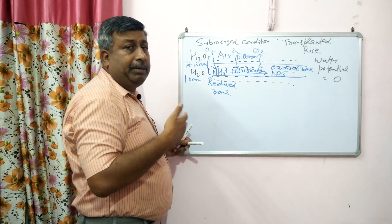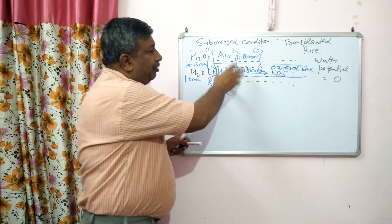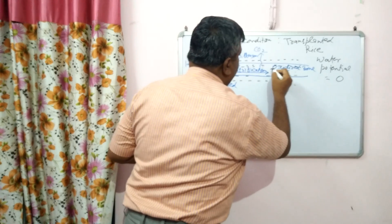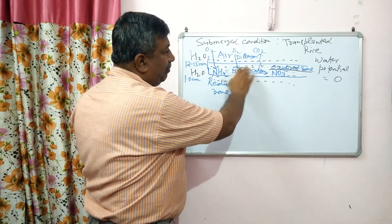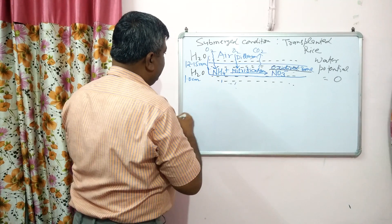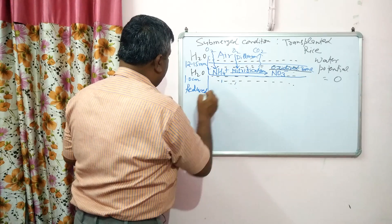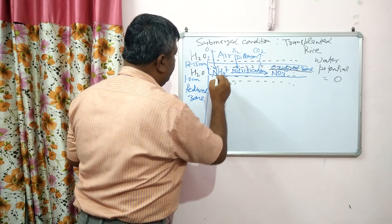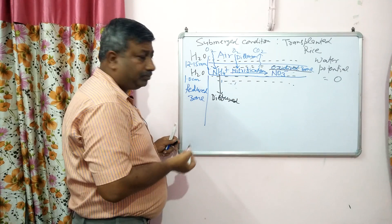In the oxidized zone, when we apply ammonium-containing fertilizer such as urea, it is converted into ammonium ion. Since this is the oxidized zone, aerobic microbes such as Nitrosomonas and Nitrobacter are present, and the ammonium is converted into nitrate ion through nitrification. So nitrification does occur in a submerged field, but only in the oxidized zone approximately 1 centimeter deep. Some ammonium ion also diffuses into the deeper reduced zone.